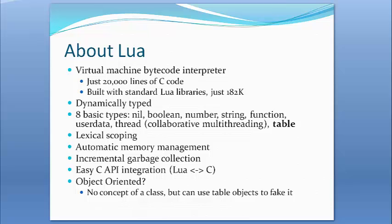Lua supports object-oriented programming, however the way it's implemented is a little different from what you'd see in C++ or Java. They use the table structure as the basis for implementing what you could call a class — though there's really no concept of a class in Lua. Instead it uses tables, and to implement inheritance you can add and remove methods to a table object, so by that interaction you can achieve things that look like inheritance. It looks like object-oriented code, and we'll look at an example in a couple of slides.